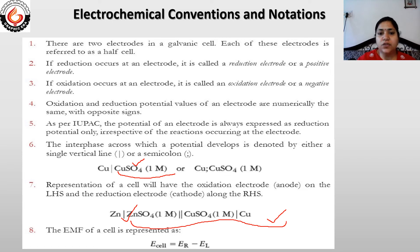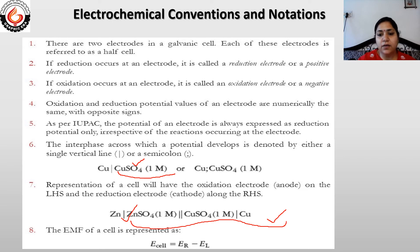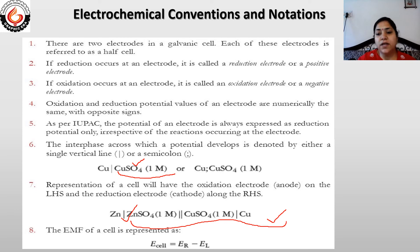These are the basic conventions and notations of electrochemistry which are very useful. By understanding cell notation, you will be able to determine which metal acts as anode, which acts as cathode, which electrode is dipped in which electrolyte solution, and what the concentration of that electrolyte solution is. These are very important for solving numerical problems.